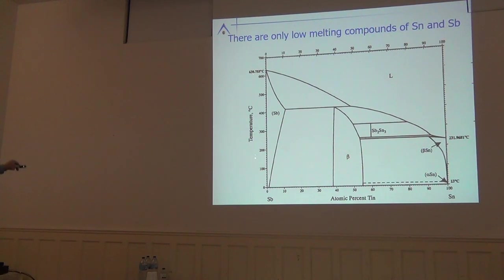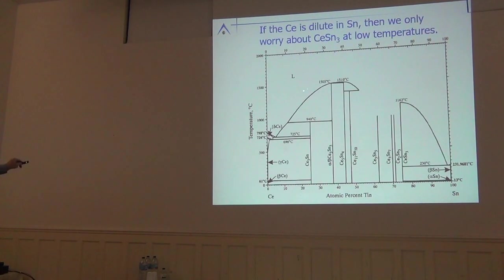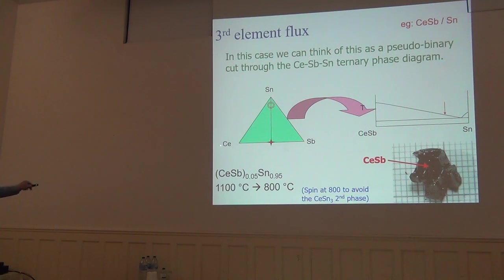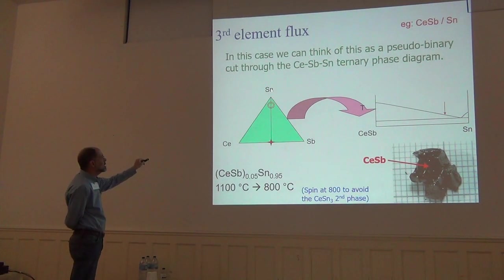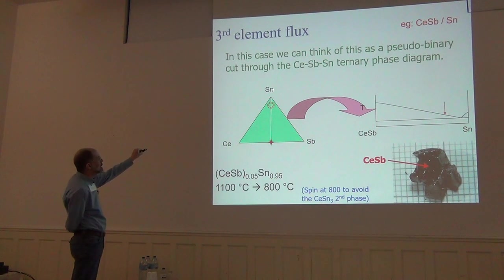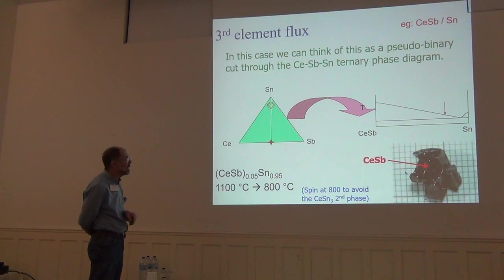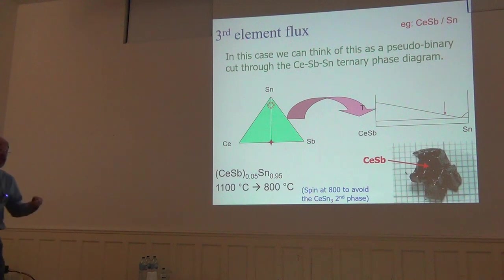The reason tin is nice is that antimony and tin have no high-melting binary compounds that might get in the way. Cerium and tin is a little problematic — if I put a little cerium into tin I can get away with small amounts, but there are some high-melting binaries to be concerned about. What I'm doing is taking a pseudo-binary cut — tin to cerium antimony — and hoping there is a liquidus line for solidification of cerium antimony. The reason I'm telling you this story is because it does work.